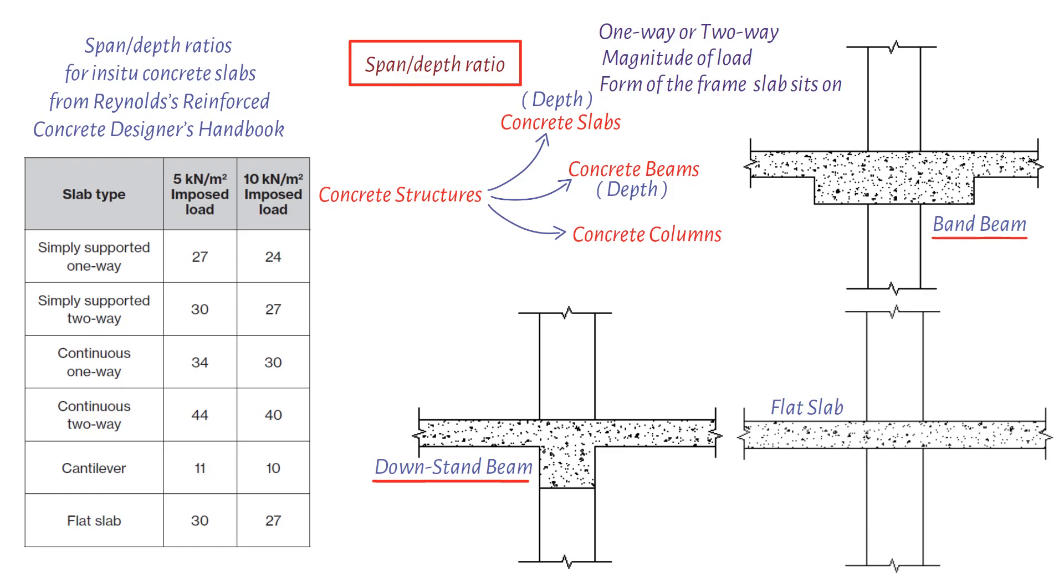To estimate the size of the column requires an understanding of the interaction between the floor structure and the columns. This is due to the transfer of bending moments from one element of the structure to another. In the first instance, the axial loads the column is expected to support must be determined. In addition, bending moments that are likely to be applied from the floor structure are calculated via analysis. This will likely include the use of moment distribution and subframe analysis methods.